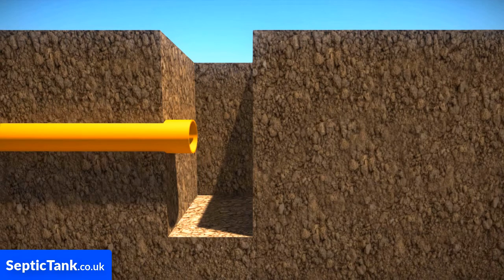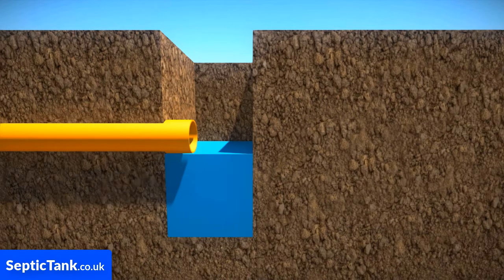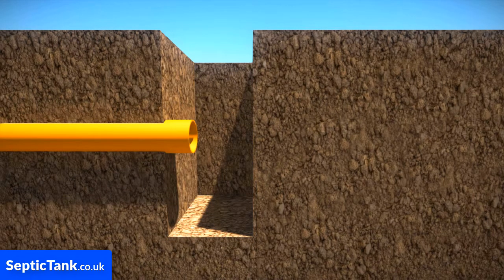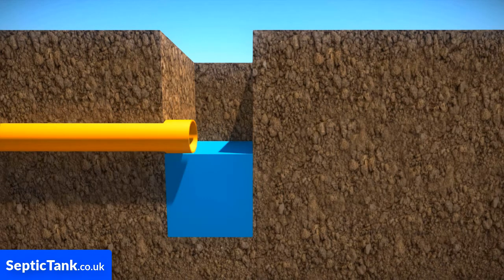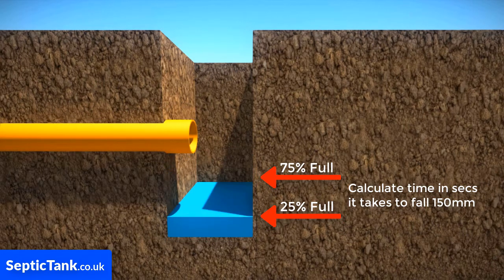Fill the 300mm square section of the hole to a depth of at least 300mm of water, and allow it to seep away overnight. Next day, refill the hole once again with water to a depth of at least 300mm, and then observe the time in seconds that it takes for the water to seep away from 75% full to 25% full — that's roughly a fall of about 150mm.